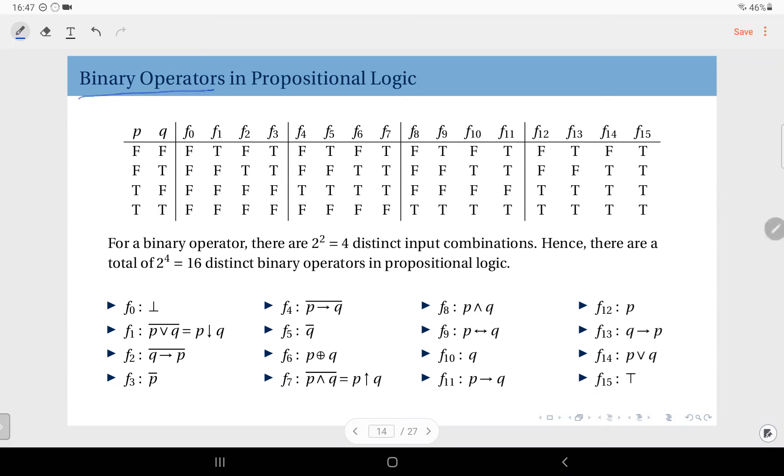It's an operation that accepts two inputs. Now, for two inputs, you have four possible input combinations. And based on these four possible input combinations, how many distinct operations can you define? The answer is 2 to the power of 4, which is 16.